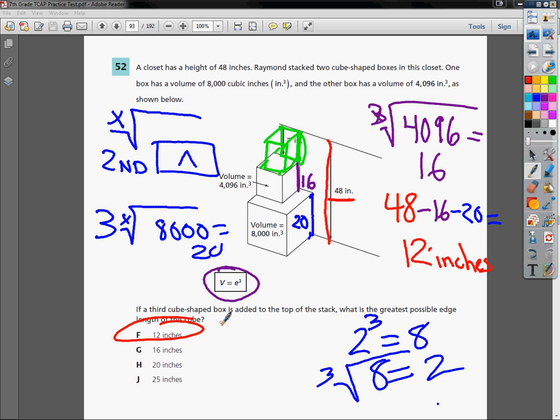Because that 12 would get me from here to here, then my 16 would take me from here to here, then my 20 would take me from here all the way to the bottom of that closet. So the answer to number 52, after all of that and lots of explanation, is F.